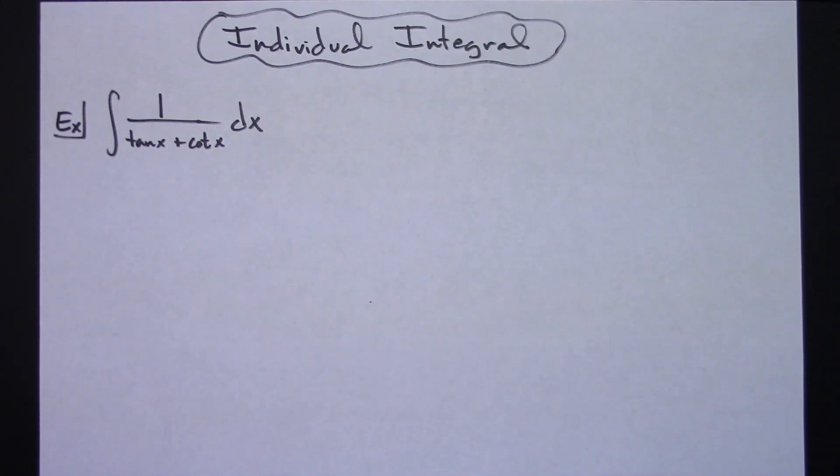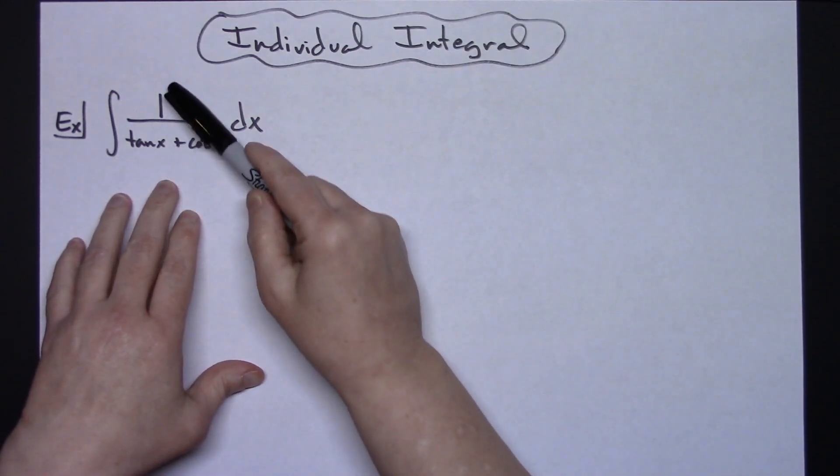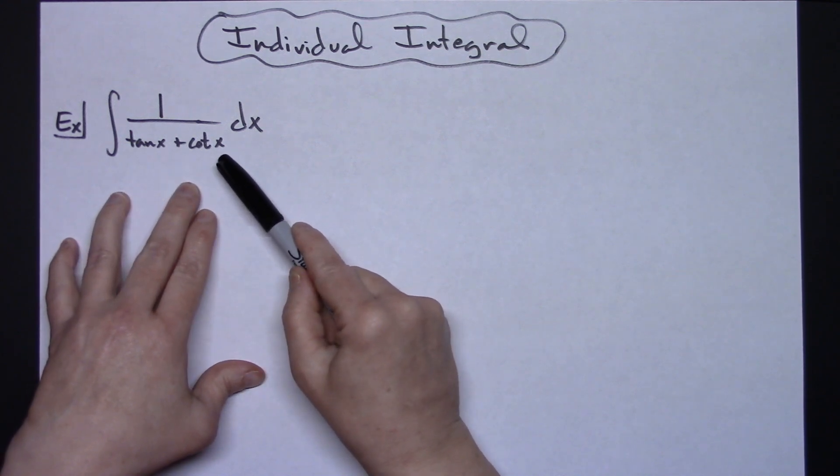Alright in this video we're going to be working out an individual integral. We're going to have the integral of 1 over tangent x plus cotangent x dx.